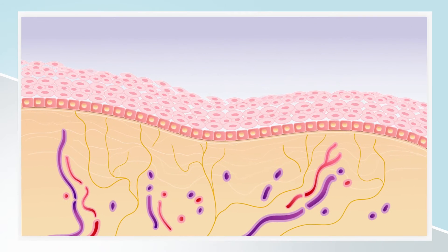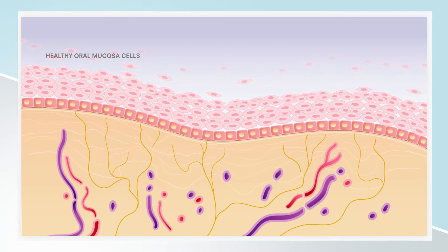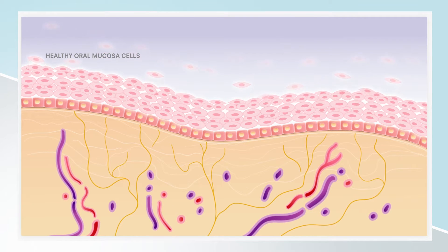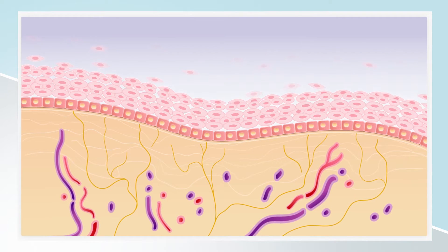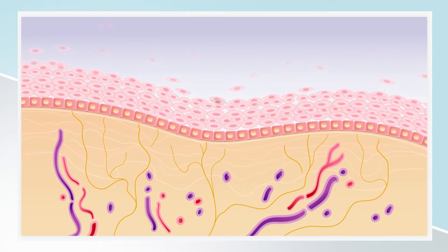Healthy oral mucosa cells are constantly being lost and replaced to maintain the integrity of the mouth lining. They act as a barrier, protecting the mouth against pathogens and the deeper tissues, including muscles and nerves, from trauma such as chewing.